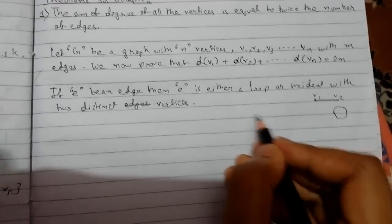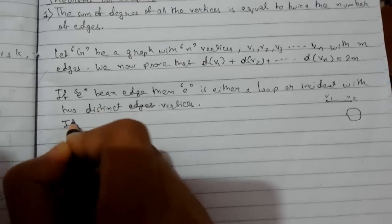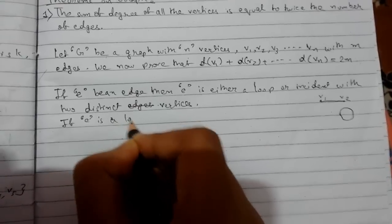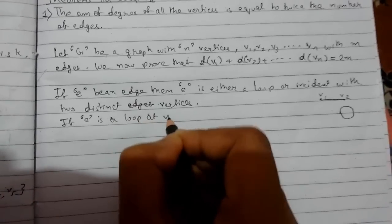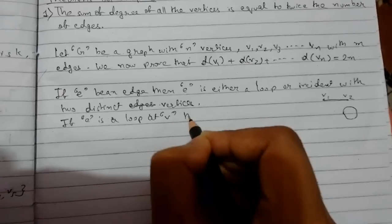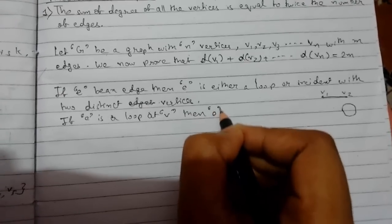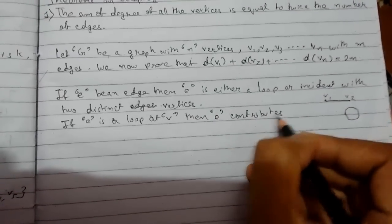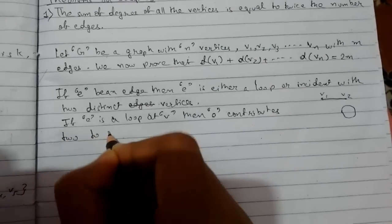If e is a loop at vertex v, then e contributes to the degree of v, or if e is incident with two distinct vertices...